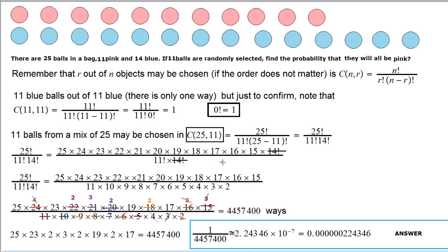Say we would like to compute the value of C(25,11), that is a combination of 25 objects taken 11 at a time.